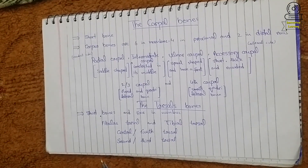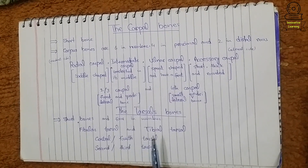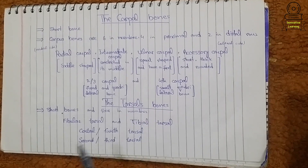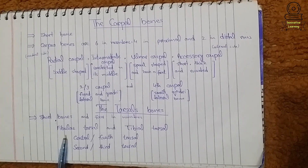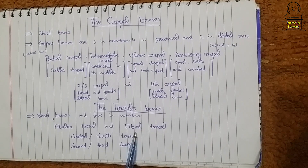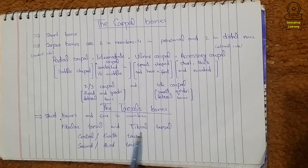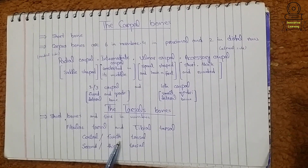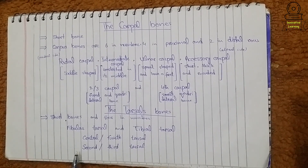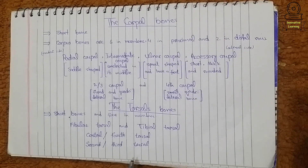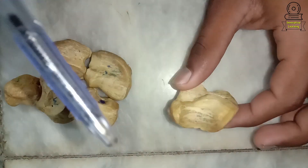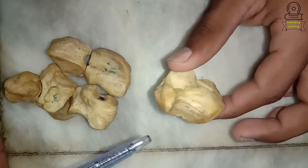Tarsal bones are short bones present in the hind limb of the skeleton. There are four tarsal bones: first is fibular tarsal, second is tibial tarsal, third is central and fourth tarsal which are fused with each other, and fourth is second and third tarsal.